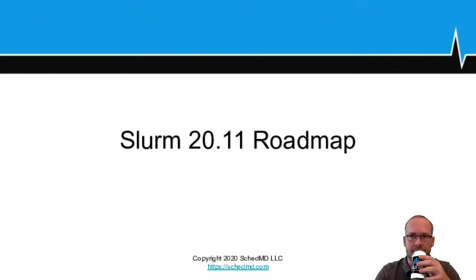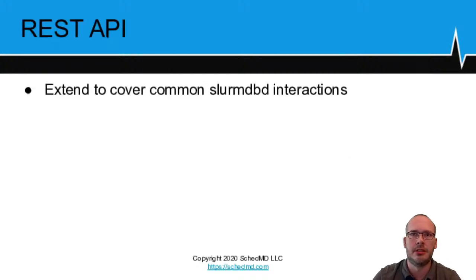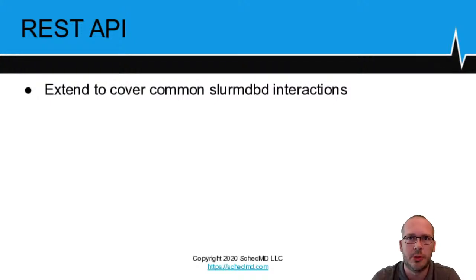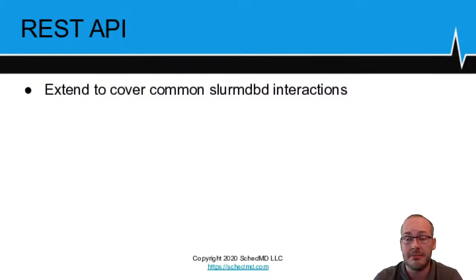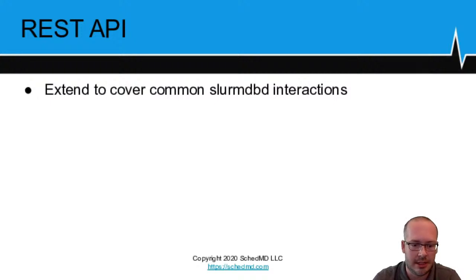Moving into the Slurm 20.11 roadmap coming out in November. The REST API — as Nate talked about this morning — we're extending it to not just cover common Slurm controller interactions but also start covering Slurm database interactions, most critically giving you a convenient interface to accounting records in a format easier to ingest into other systems. Longer term, the hope is that projects such as openXdMOD will potentially move to using this as the interface for grabbing accounting data rather than scraping through sacct directly.